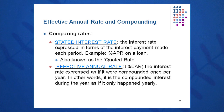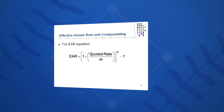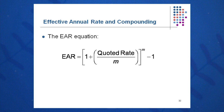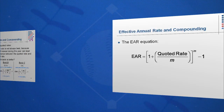EAR is the rate expressed as if it were compounded once per year. So we convert monthly compounding into annual compounding, and in general you'll pay a little bit more. The formula is: EAR equals 1 plus the quoted rate over m, to the mth power, minus 1. Equivalently, EAR equals 1 plus APR over m, to the mth power, minus 1, where m is the number of compounding periods.